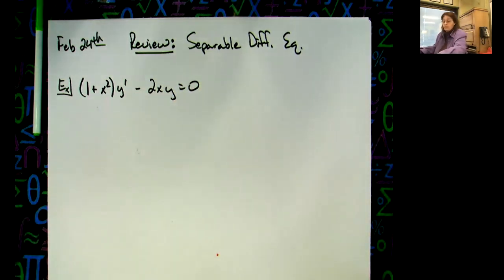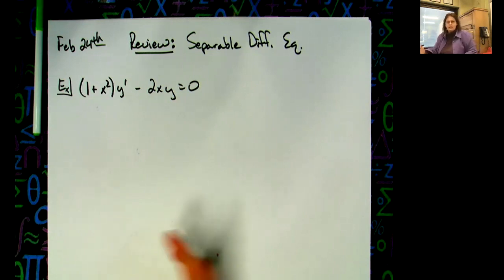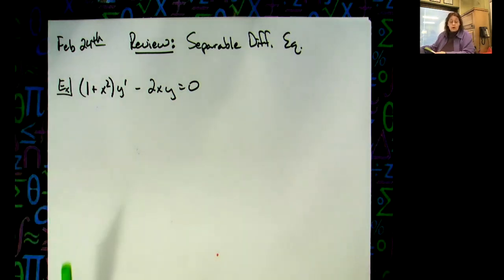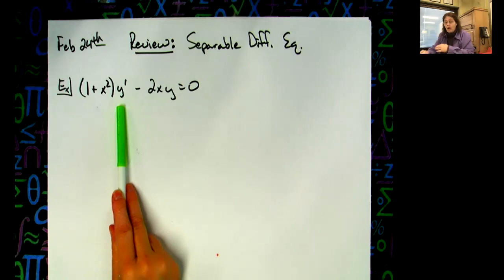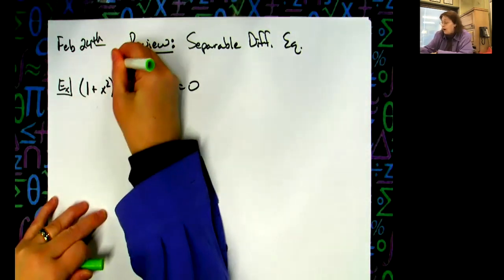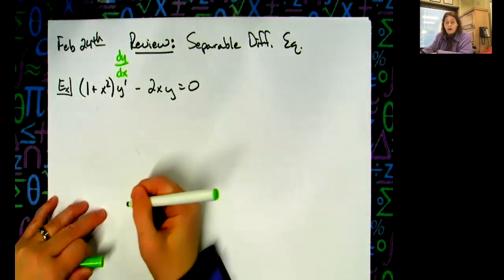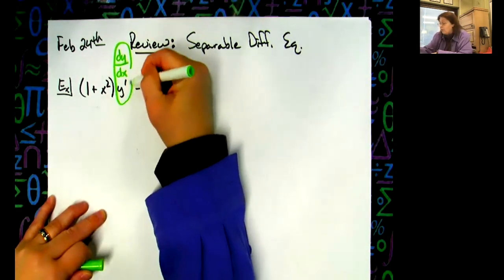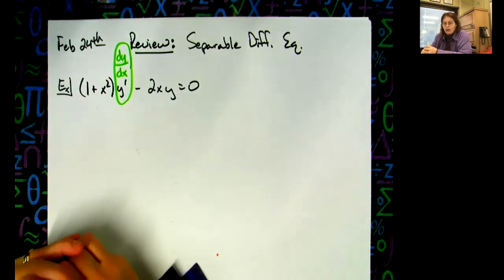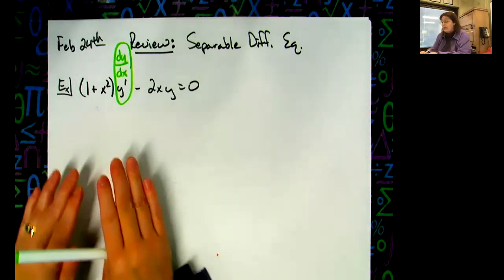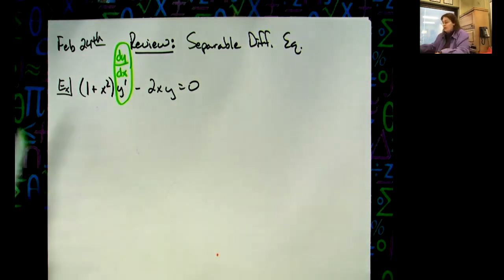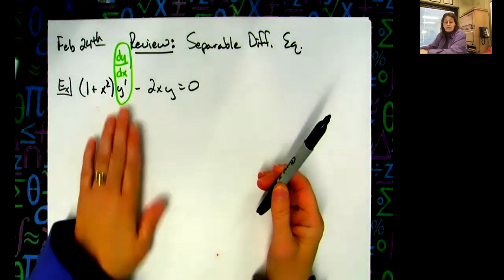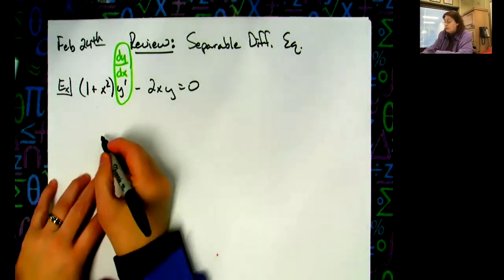Some of you came up and asked about seeing y prime in it. At any point you can replace y prime with dy over dx. That form might help you recognize it's a differential equation and that you need to separate those variables. You can do it immediately or later in the problem — it really doesn't matter when.